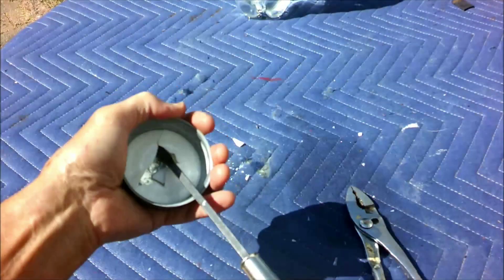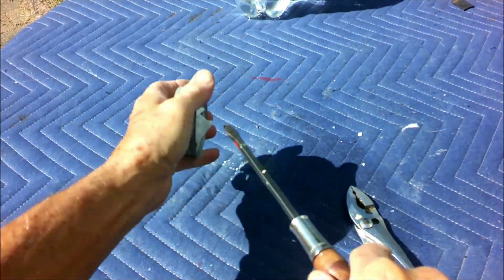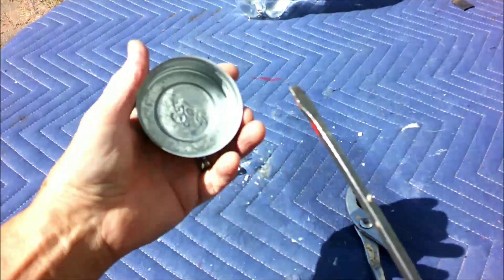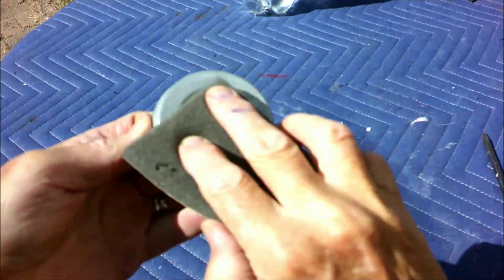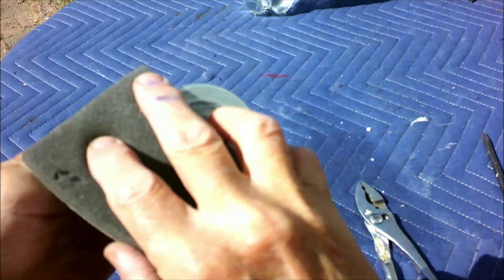Now we're going to go ahead and sand it in. Same thing with this, we're going to find center point, drill a pilot hole and then the regular size hole to fit the lamp fixture.